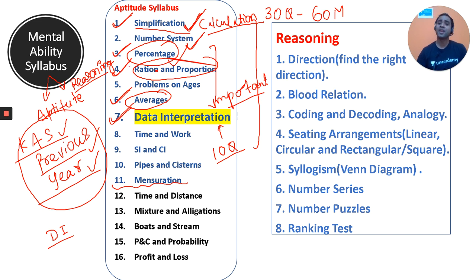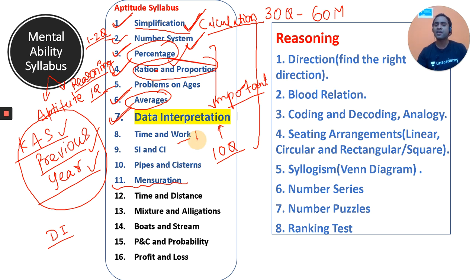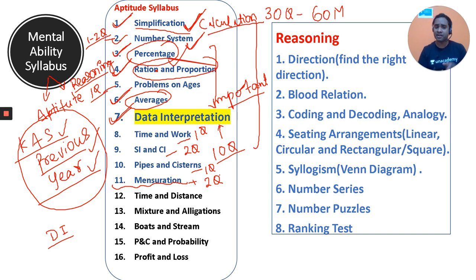From number system you'll get 1–2 questions. Problems on ages gives 1 question. Time and work is important — 1 question. Simple and compound interest gives 1–2 questions. Pipes and cisterns gives 1 question. Mensuration gives 2–3 questions. All topics listed in blue are must-read topics.